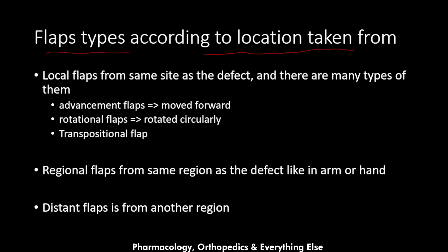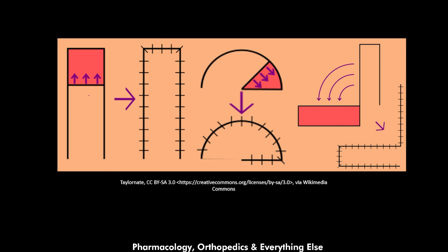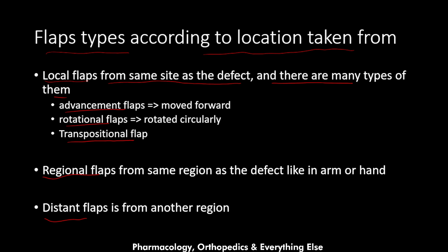Flaps are classified according to location into local flaps, regional flaps, and distant flaps. Local flaps are taken from the same area as the defect and include advancement flaps, rotational flaps, and transpositional flaps. In advancement flaps, the flap is advanced forward toward the wound; in rotational flaps, it is rotated toward the wound; in transpositional flaps, it is transpositioned to the recipient area. Regional flaps come from the same region as the defect, and distant flaps come from a different region.